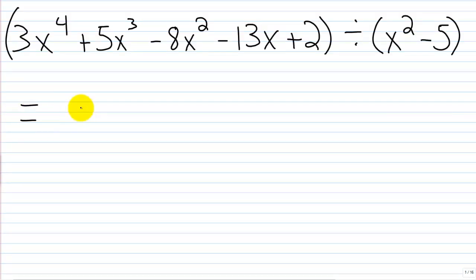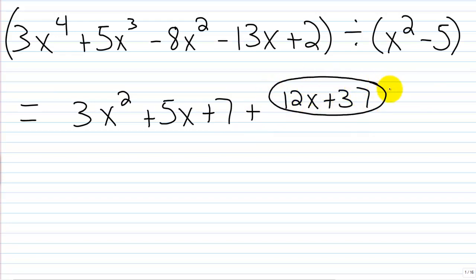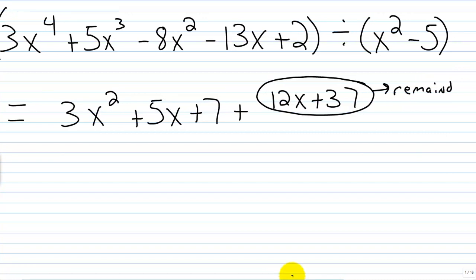So the answer was 3x squared plus 5x plus 7, and our remainder was 12x plus 37. We write the full result as 3x squared plus 5x plus 7, plus the remainder 12x plus 37 written over the divisor, which is x squared minus 5.